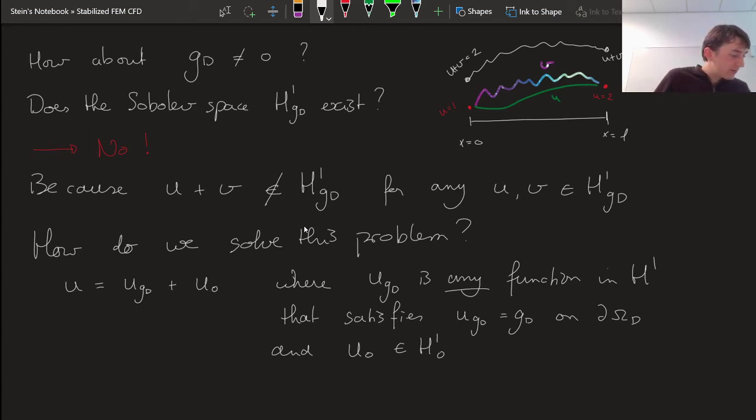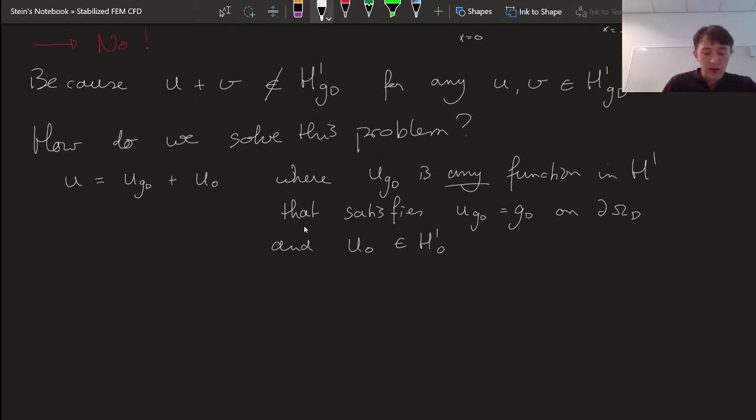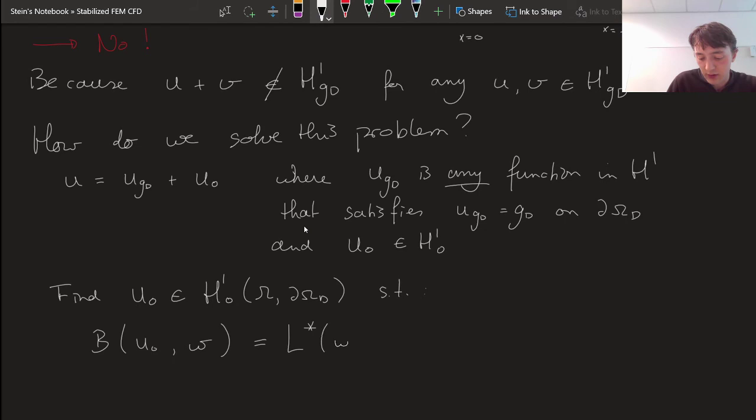Now if I do that, and I fix my choice for u_gd, then my variable is going to be u_0. And I can actually phrase my weak formulation as find u_0. That's the one that we're now looking for. And this is again a function in H^1_0, such that... So then we have the same bilinear form as we did before, but now acting on u_0 and w. And it's going to be equal to the same linear form that we had before, but I'll still use a star here.